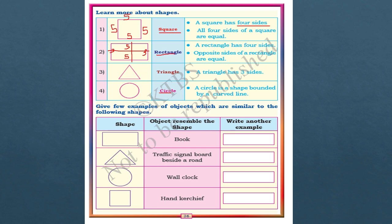Give a few examples of objects similar to the following shapes. For rectangle, an example is given as book — you can also write matchbox. For triangle, a traffic signal board is given. Write one example for each shape.